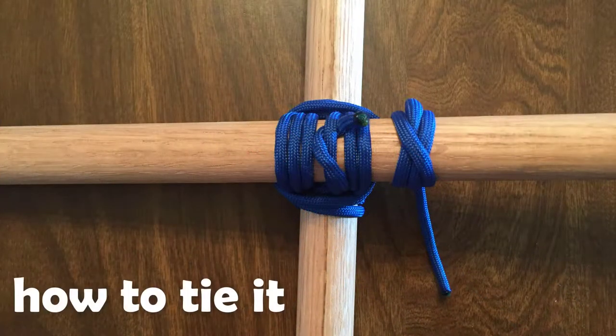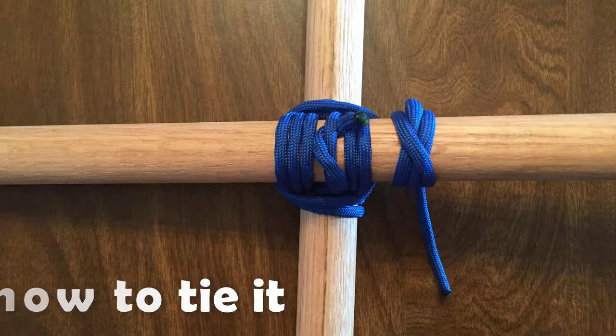Similar to the Square Lashing we did previously, the Shear Lashing consists of wrapping and frapping turns.